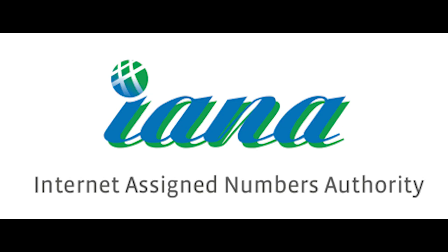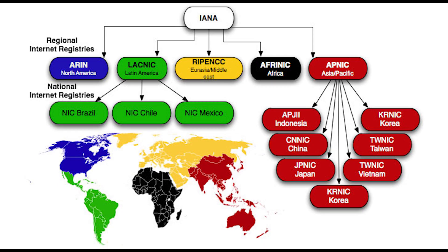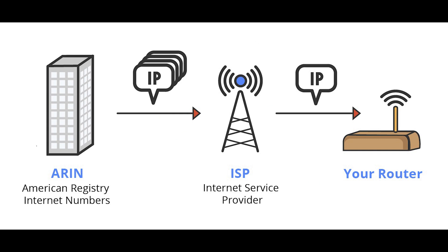If you want to connect to a system on the internet, you need to have a valid registered IP address. The Internet Assigned Numbers Authority, IANA, is responsible for assigning IP addresses to public networks. However, because of the workload involved, IANA has delegated the assignment process to a number of regional authorities. Internet service providers have large blocks of IP addresses that they can assign to their clients as well, which is the more common way to get one.